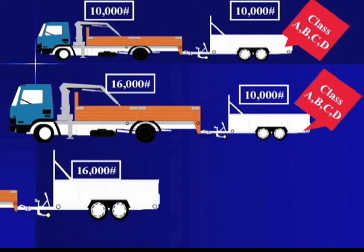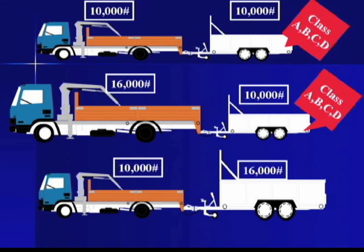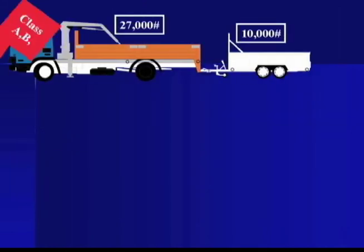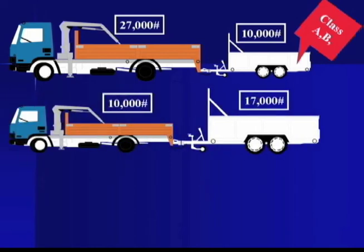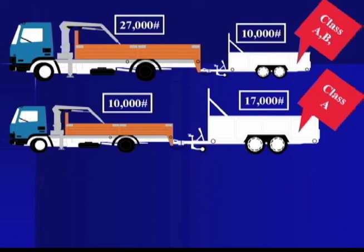For example, if you've got a power unit at 27,000 pounds towing a trailer over 10,000 for a combination of 37,000, you need an A or B license. If the trailer doesn't break the 10,000-pound mark, you'd still need a Class A because the power unit is at 10,000 and the trailer is over 10,000 pounds for a total of 27,000.